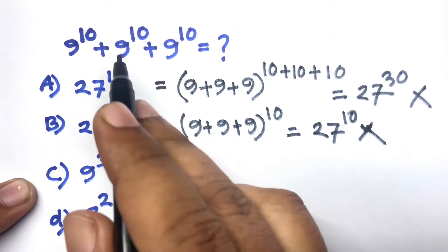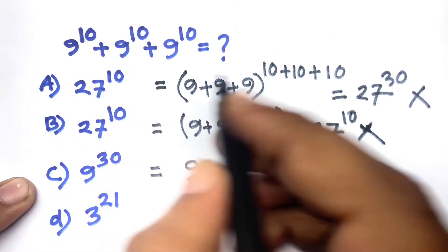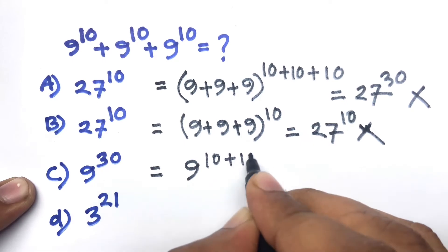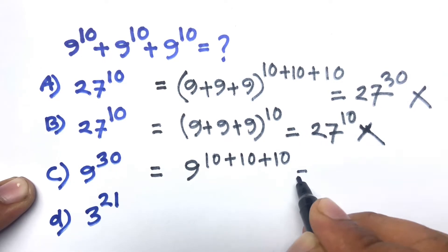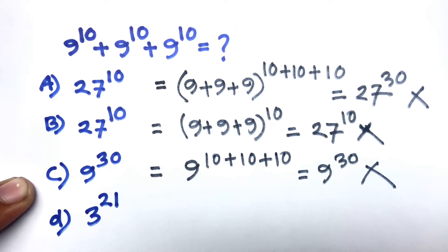Now again, sum of power this time. I can say base is same, so base is same, sum of power is 10 + 10 + 10. This time I can say 9^30, it is also wrong answer. Probably number D is the right answer.